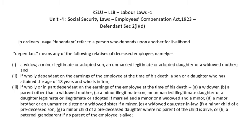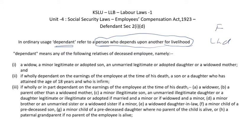In general terms, a dependent refers to a person who depends on another for livelihood — for day-to-day expenses, food, travel, clothes, and other things. A person who completely depends on another is called a dependent. For example, children are dependent on the father for earnings, and if the wife is not working, the mother is also dependent on the father's earning. This is the general definition of dependent, but according to Section 2(1)(d) of the Employees' Compensation Act 1923, dependents are classified into three categories.